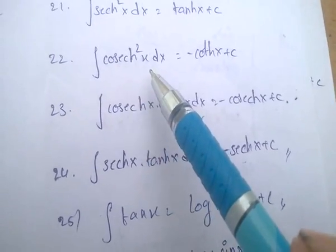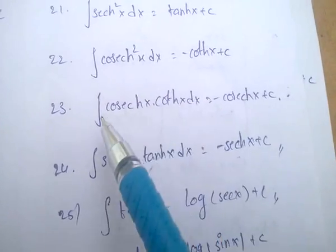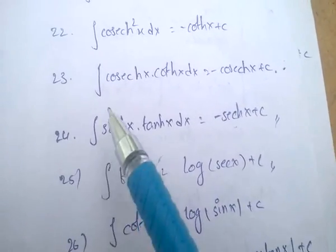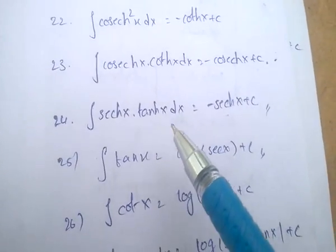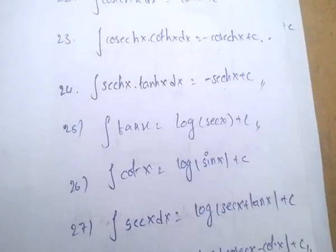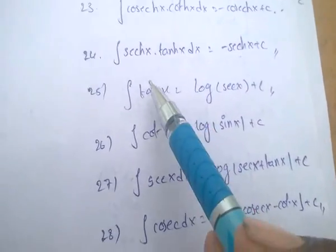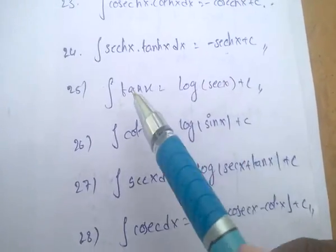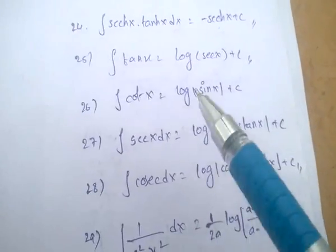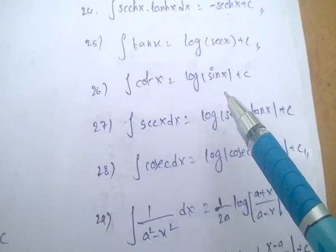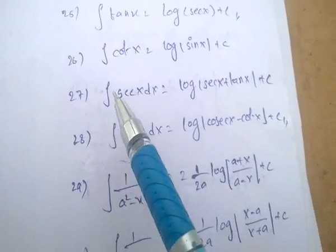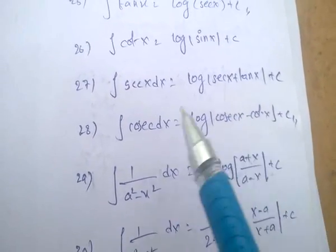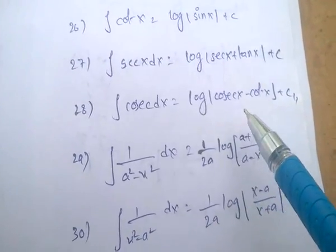Integral of cosech²x dx equals minus cosech x. Integral of sech x tanh x equals minus sech x. Integral of tanh x equals log of sech x. Integral of cot x equals log of |sin x|. Integral of sec x dx equals log of |sec x plus tan x|. Integral of cosec x dx equals log of |cosec x minus cot x|.